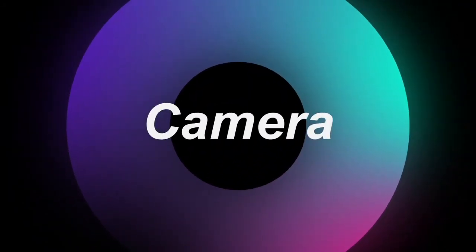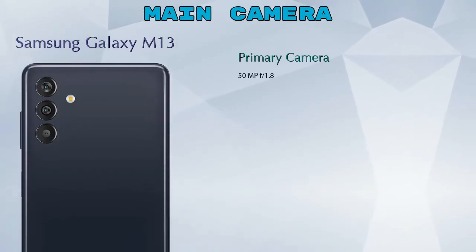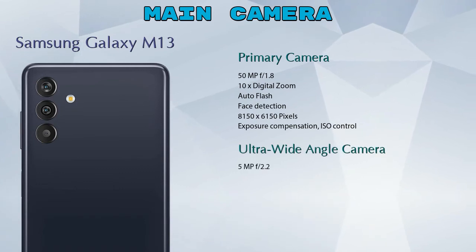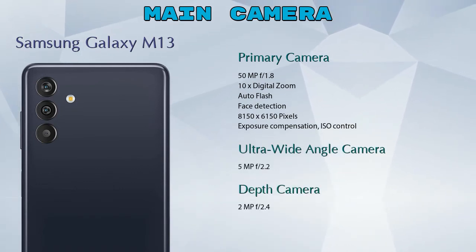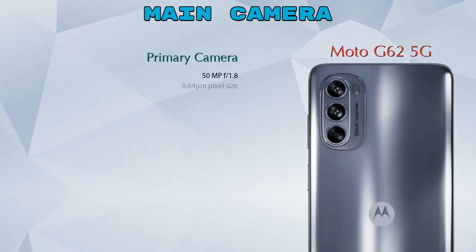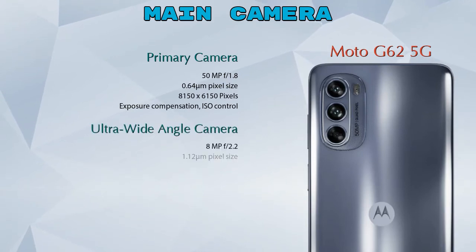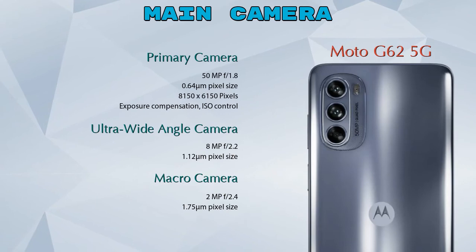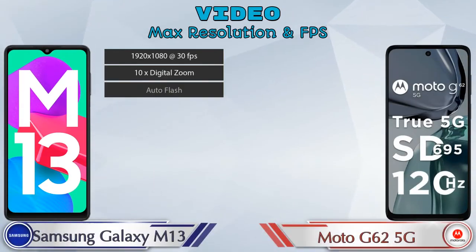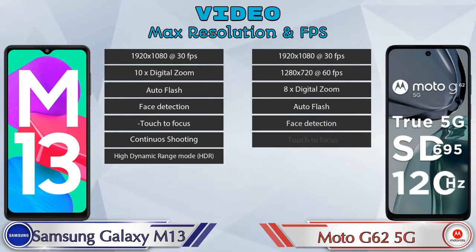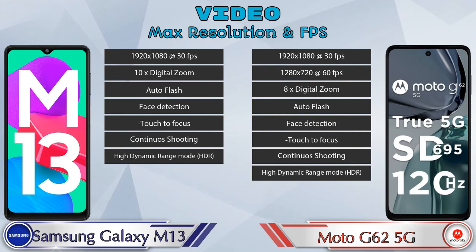Let's see the details about camera. First, talking about the rear camera — we can see three cameras in Galaxy M13: a primary camera, ultra-wide angle camera, and depth camera. Moto G62 5G also has three cameras: a primary camera, ultra-wide angle camera, and macro camera. Talking about video camera, Galaxy M13 has seven and Moto G62 5G has eight different types of features available.